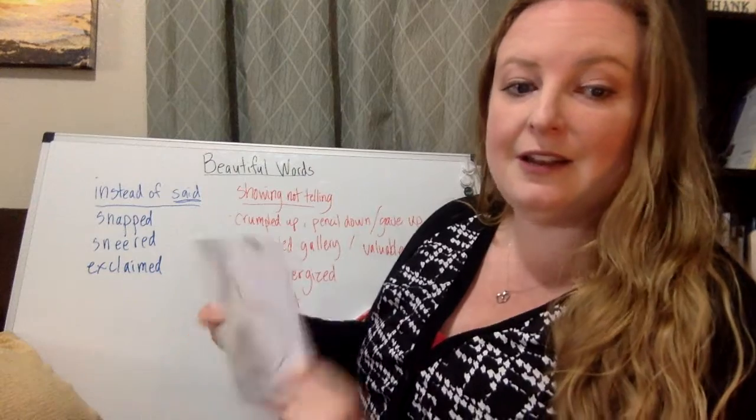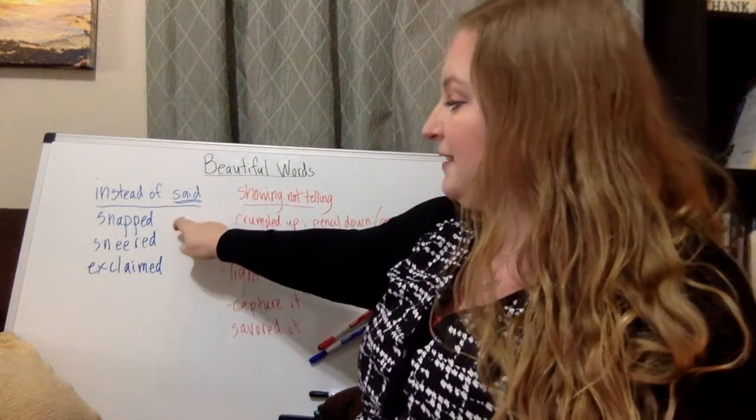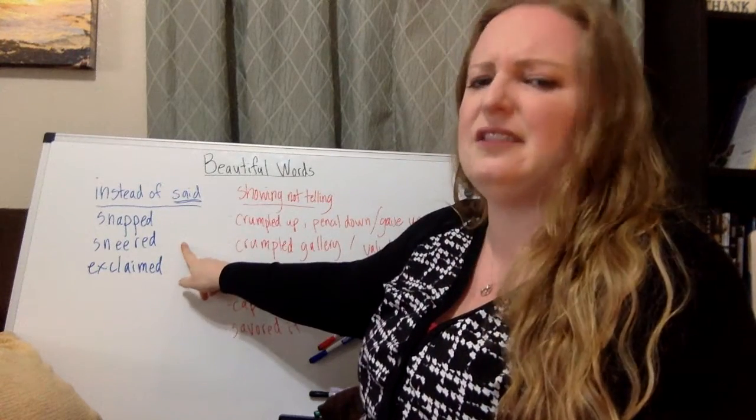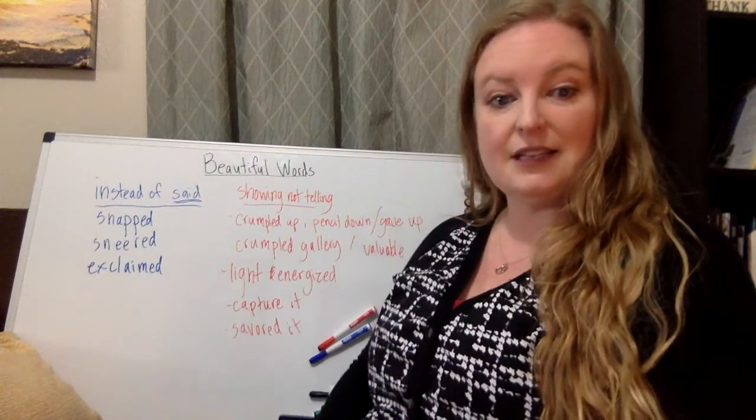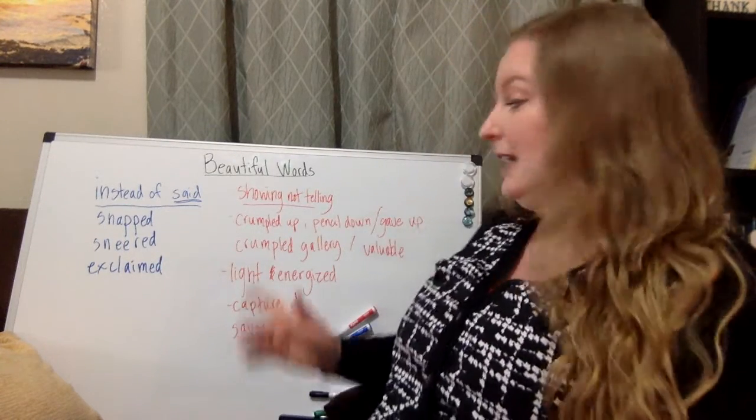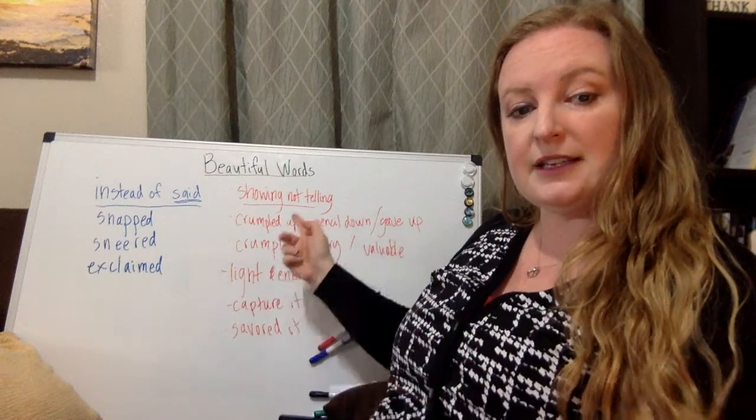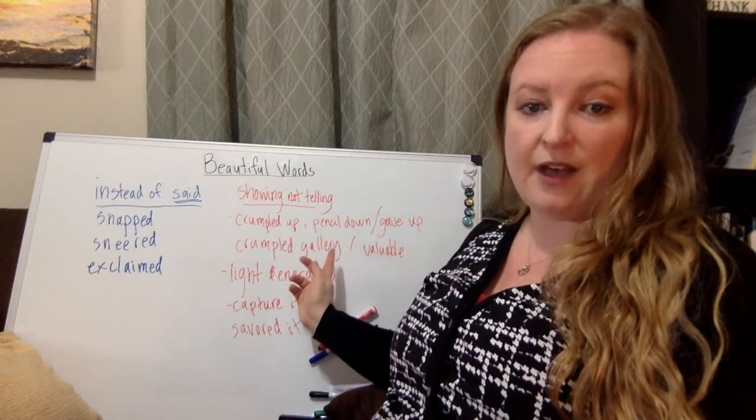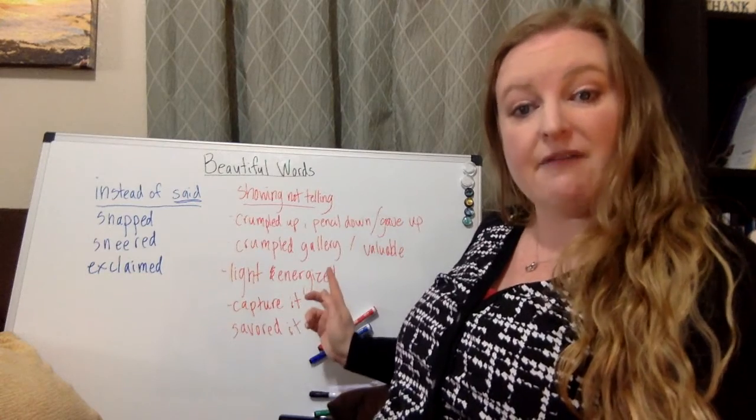So let's see. In this lovely book about ish, some of the words instead of said was snapped, sneered like 'oh you're ridiculous,' and exclaimed because she was so excited. Maybe in your writing you can use some of those words instead of said. And then some of the showing not telling that Peter Reynolds does in Ish is crumpled up and penciled down instead of saying gave up. And then later it's a crumpled gallery, which means it's now valuable.